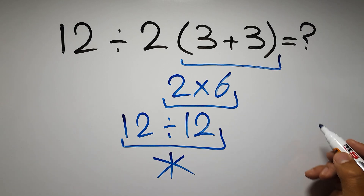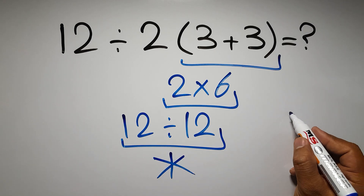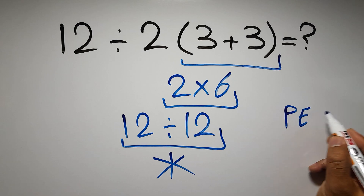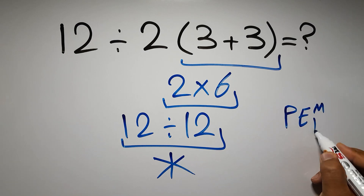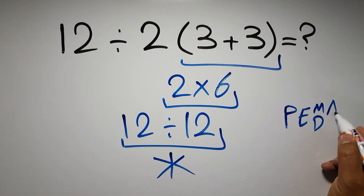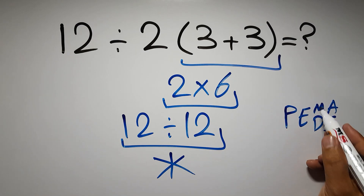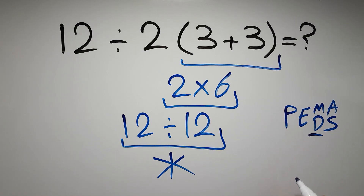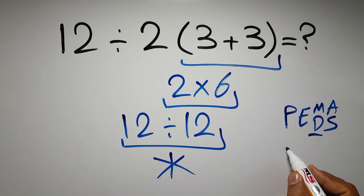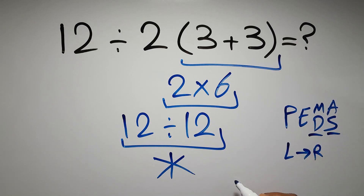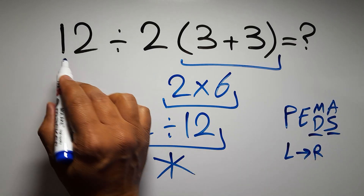According to the order of operations, first we have to do parentheses, then exponents, then multiplication or division, and finally addition or subtraction. Remember that multiplication and division have equal priority, and we have to work from left to right. The same applies to addition and subtraction.